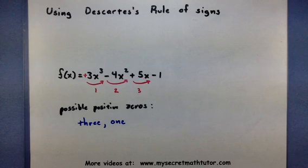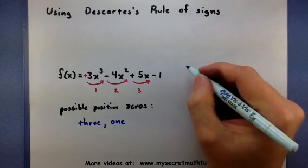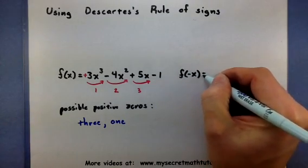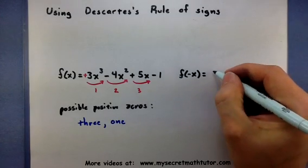Now Descartes' rule of sign also gives you a lot of information about the negative zeros that are in here. But in order to look at those, you count the sign changes in f of negative x.